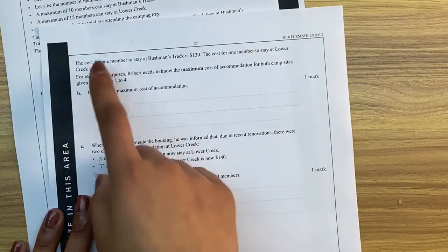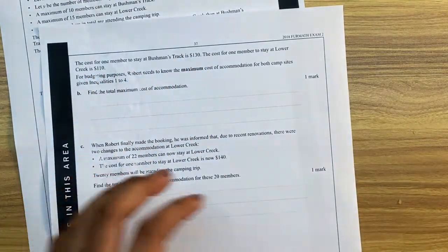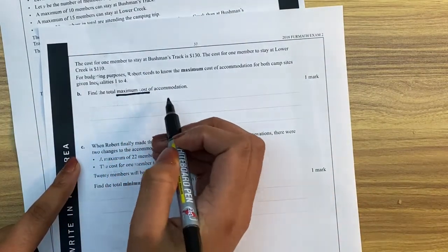And if we look here, the first question is giving us the cost of each of the campsites. And the question says, find the total maximum cost of accommodation.